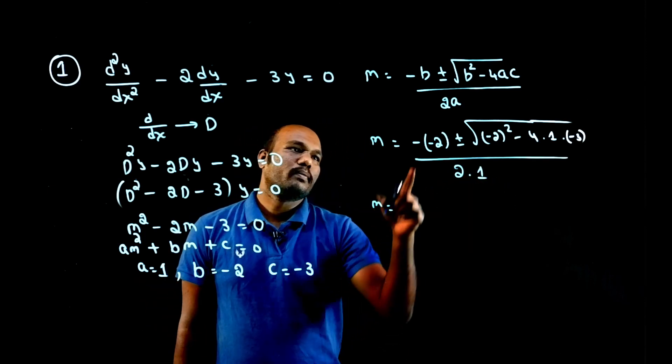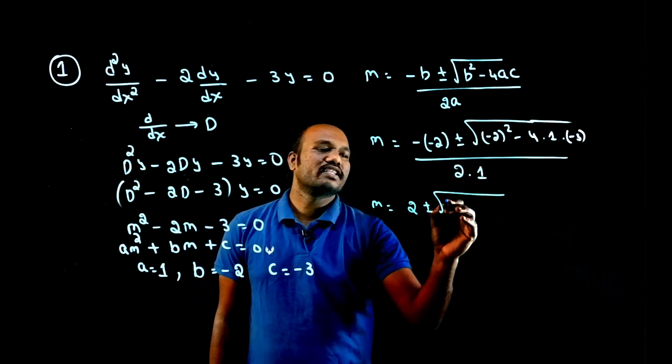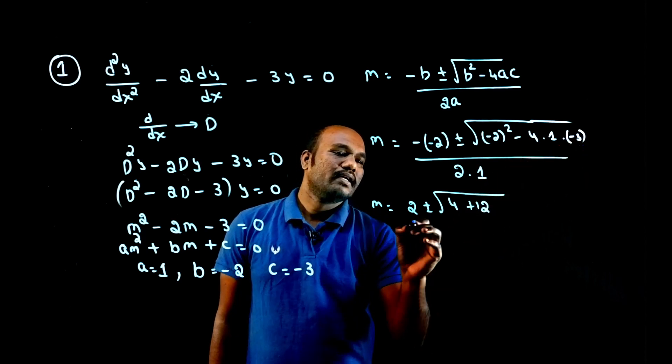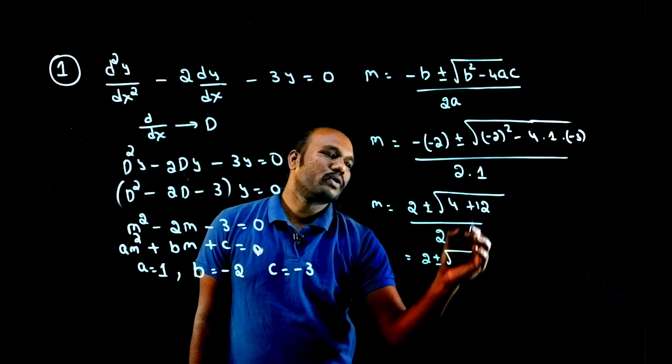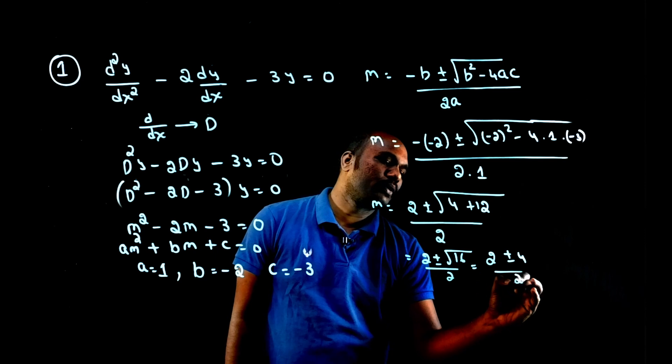So m is equal to minus into minus is plus 2 plus or minus root of minus 2 square is 4. Minus into minus is plus, 4 into 3 is 12, divided by 2 into 1 is 2. So 2 plus or minus root 16 divided by 2. How much is root 16? 4 divided by 2.